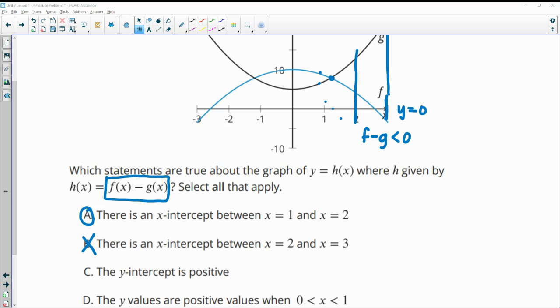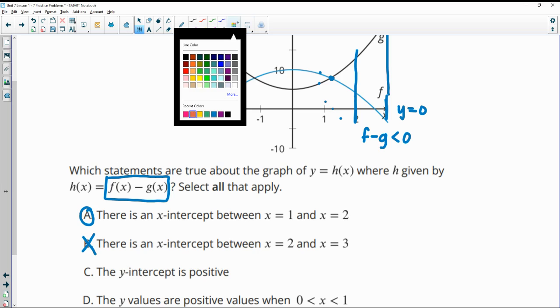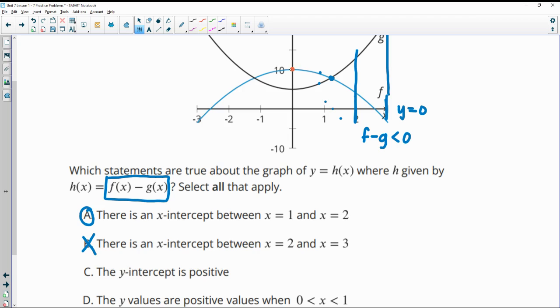Part C says that the y-intercept is positive. So the y-intercept is going to be here on the y-axis. So we're going to be subtracting these two. And remember, we're doing f, this top part here, minus g. So this is a bigger number minus a smaller number. So that's going to be positive. So f minus g is going to be greater than zero, meaning that our y-intercept is positive.